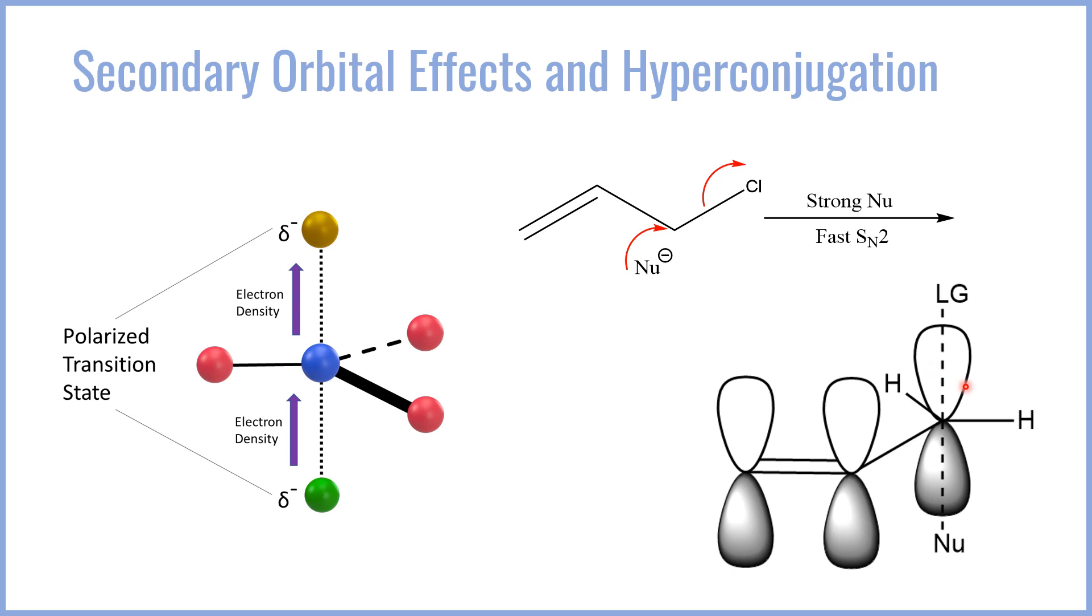Anytime you can delocalize electron density, you stabilize whatever condition the molecule is in. So in this case, being able to delocalize electron density in this transition state towards this pi orbital stabilizes the transition state and increases the rate of reaction since transition state stability is directly related to reaction rate.